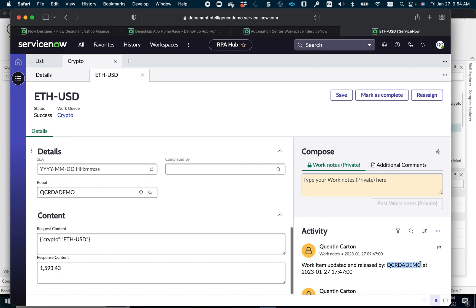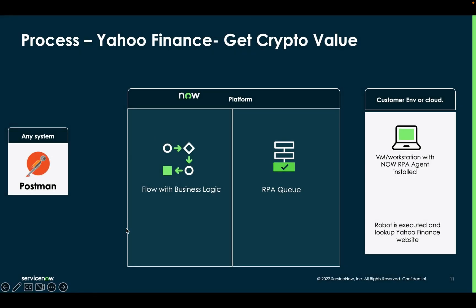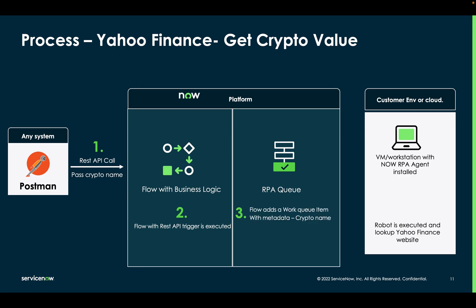Reopening the work item to close the loop — you can see the response provided by the robot, updated directly by the robot, and there's the name of the robot, basically the name of the virtual machine. To recap: I triggered the workflow from Postman by making an API call and passing the crypto name to a workflow with an API trigger. That workflow added the RPA work item in the ServiceNow queue, then triggered the robot to perform the UI automation using Google Chrome — navigating through the website, grabbing the table, finding the value — and the last step updated the work item with the retrieved value.